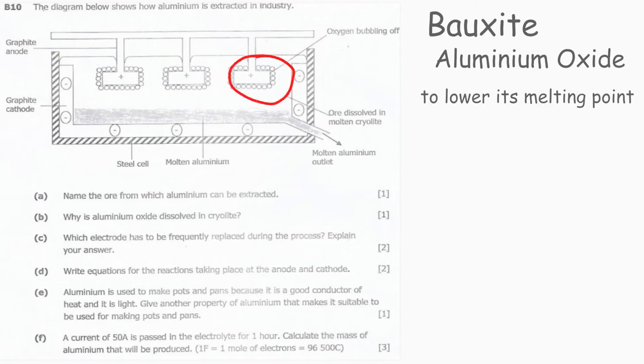This is because the anode is made of graphite, which is eaten away when oxygen reacts with the graphite to form carbon dioxide gas. So the answer is: the anode is the electrode which has to be frequently replaced because it is eaten away when oxygen reacts with the graphite.